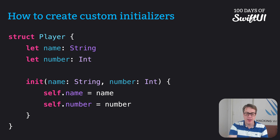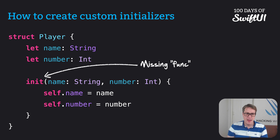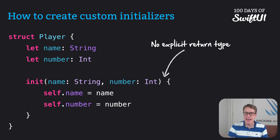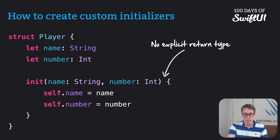There are a few things to keep in mind — in fact, three. First, there is no func keyword. It's not "func init". Yes, this looks like a function in terms of syntax, but Swift treats initializers specially. Second, even though this creates a new Player instance, init does not return anything — there's no explicit return type. They always return the type of data they belong to; it'll always return a Player.